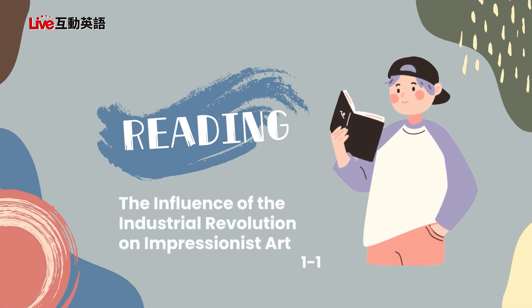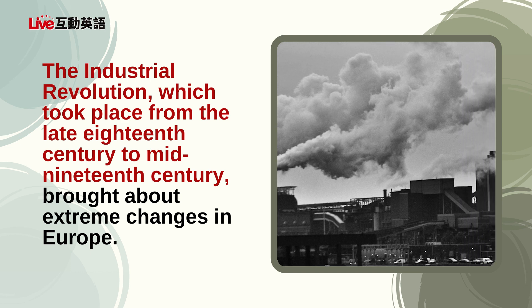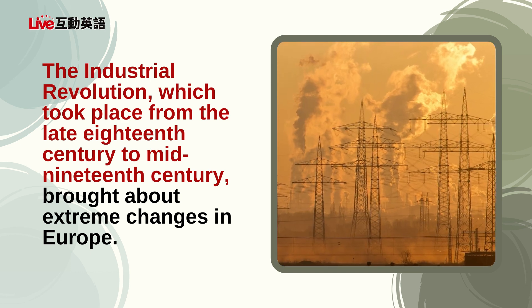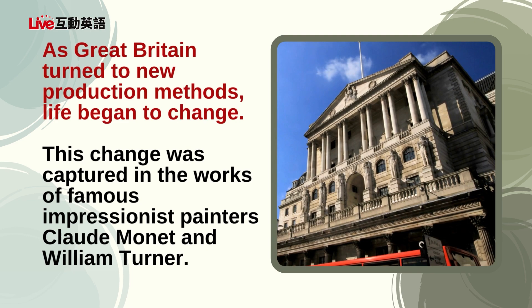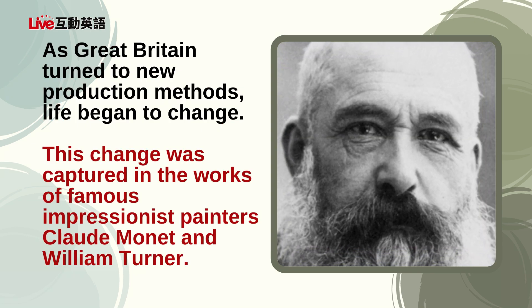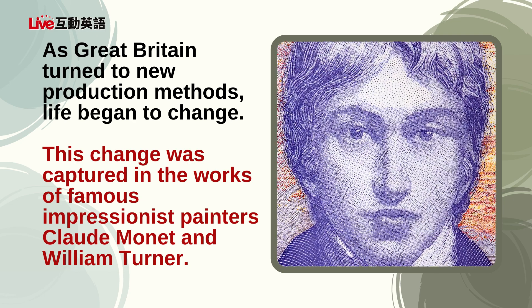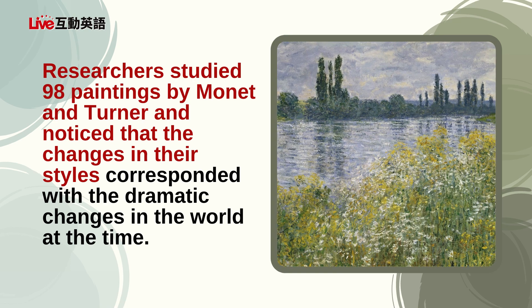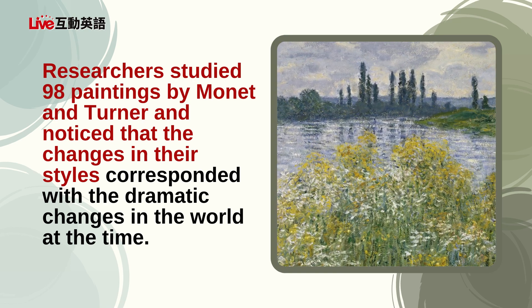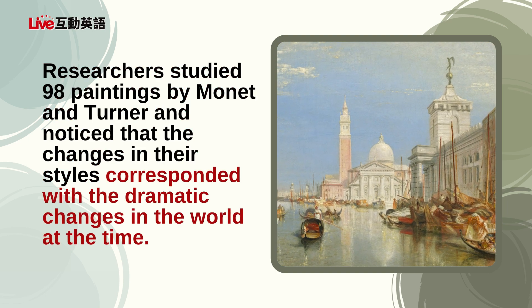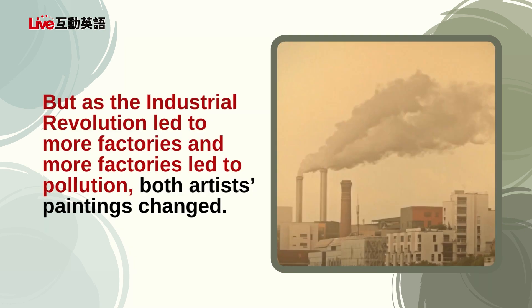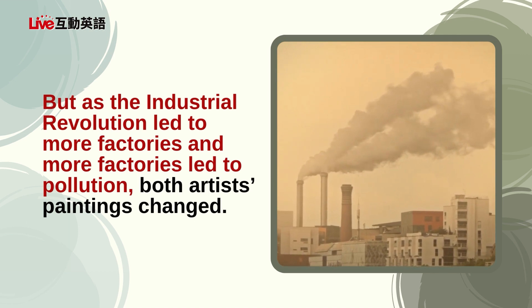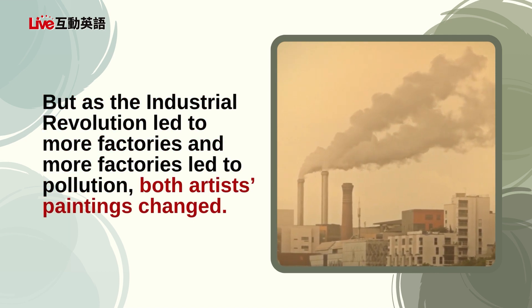Let's get into it. The Industrial Revolution, which took place from the late 18th century to mid-19th century, brought about extreme changes in Europe. As Great Britain turned to new production methods, life began to change. This change was captured in the works of famous Impressionist painters Claude Monet and William Turner. Both Monet and Turner were known for their sharp, colorful paintings. But as the Industrial Revolution led to more factories, and more factories led to pollution, both artists' paintings changed.